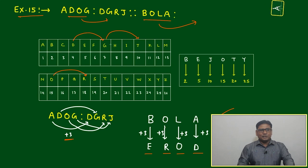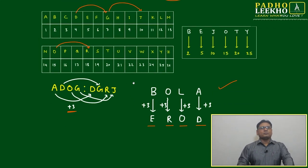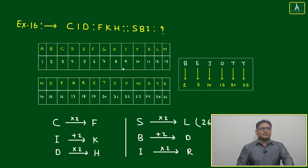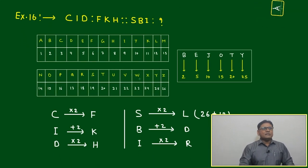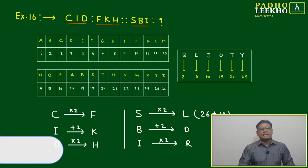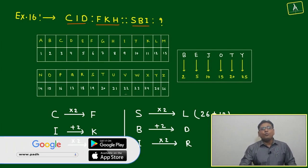This numerical position you must remember easily. You should figure it out because here one extra step is needed—you have to convert and reconvert. Let's come to the next example, example number 16. CID is related to FKH. Similarly, SBI will be related to what?